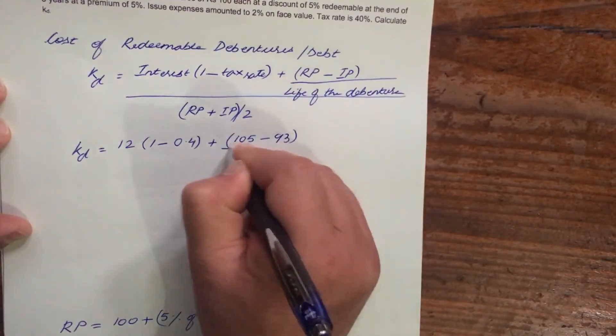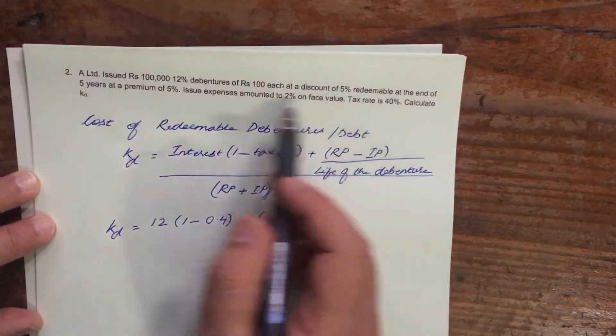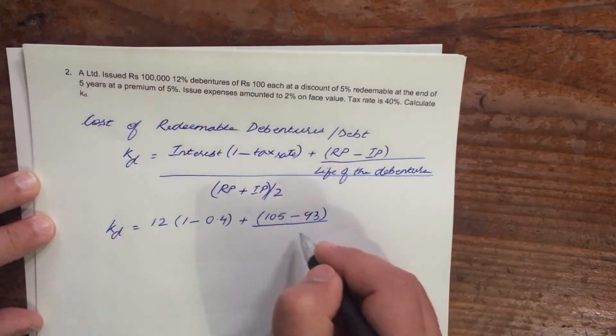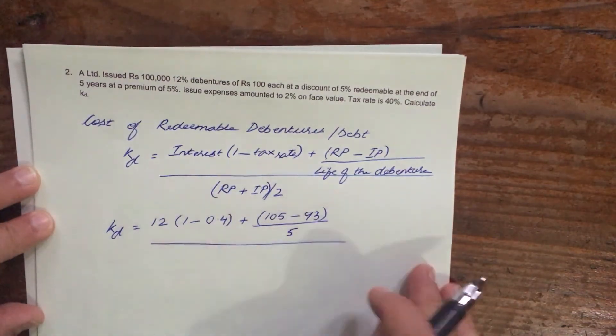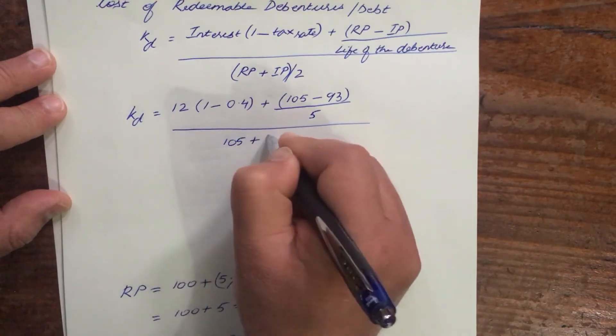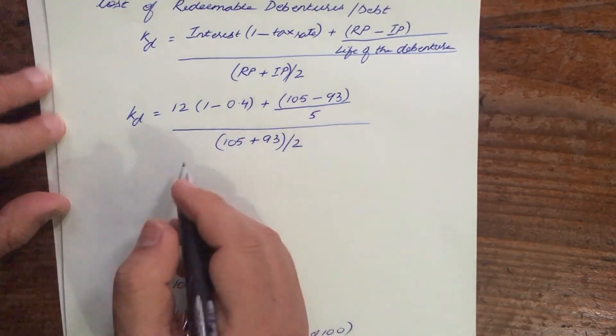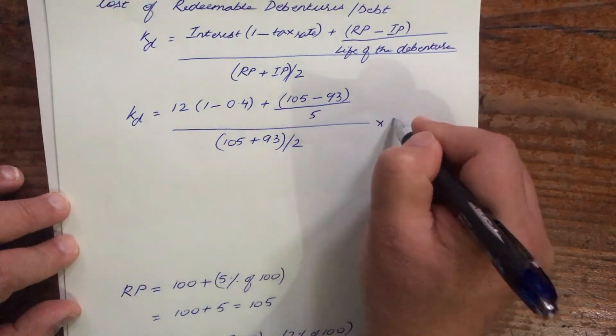93 divided by the life of the debenture. So the debenture will be redeemed at the end of 5 years. So life is 5 years. Maturity period is after 5 years. So Rp is 105 plus 93 divided by 2 and into 100.